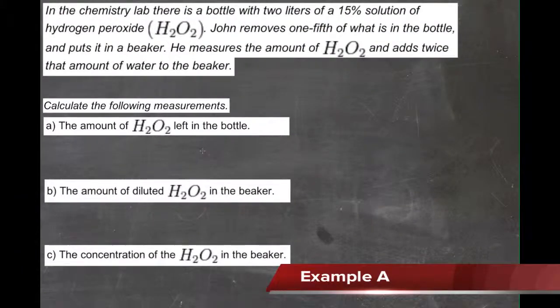Okay, we're going to apply what we've been working on with multiplying and dividing fractions. In a chemistry lab, there's a bottle with two liters of a 15% solution of hydrogen peroxide, H2O2. John removes one-fifth of what is in the bottle and puts it in a beaker. Then he measures the amount of H2O2 in the beaker and adds twice that amount of water to the beaker.